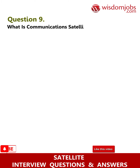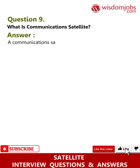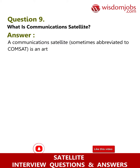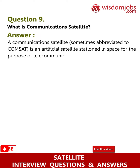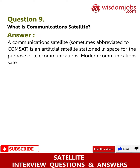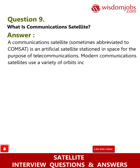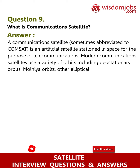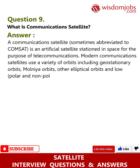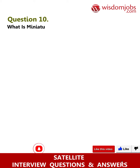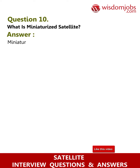Question 9: What is a communications satellite? Answer: A communications satellite, sometimes abbreviated to comsat, is an artificial satellite station in space for the purpose of telecommunications. Modern communications satellites use a variety of orbits including geostationary orbits, Molniya orbits, other elliptical orbits, and low, polar, and non-polar Earth orbits.